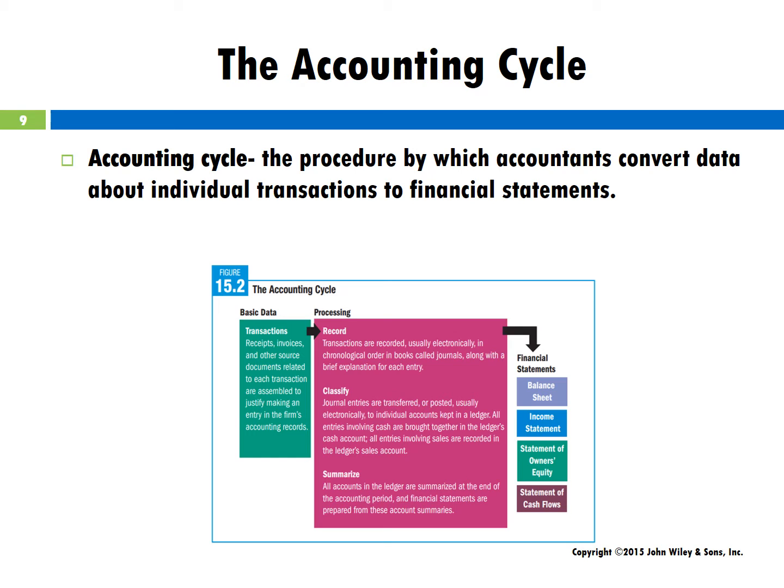The accounting process deals with financial transactions between a firm and its employees, customers, suppliers, owners, banks, and various government agencies. The procedures by which accountants convert data about individual transactions to financial statements is called the accounting cycle.